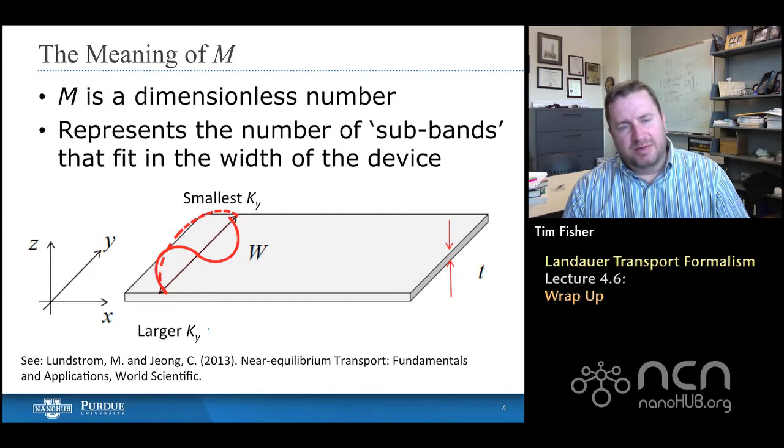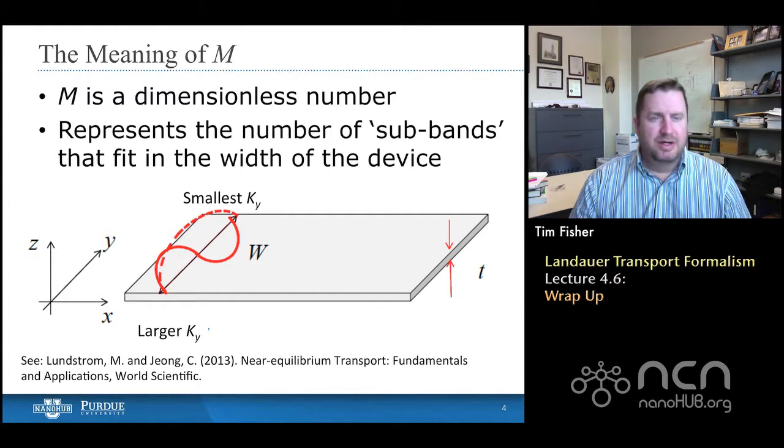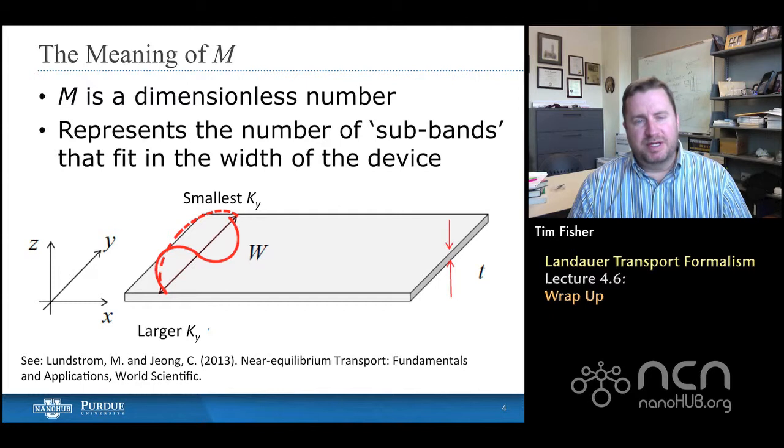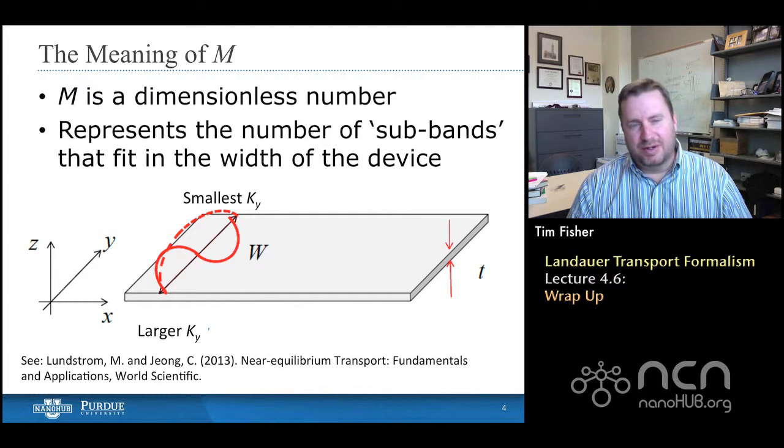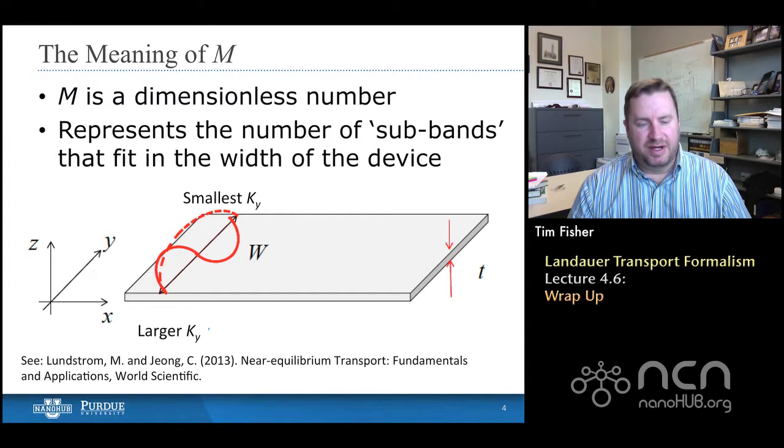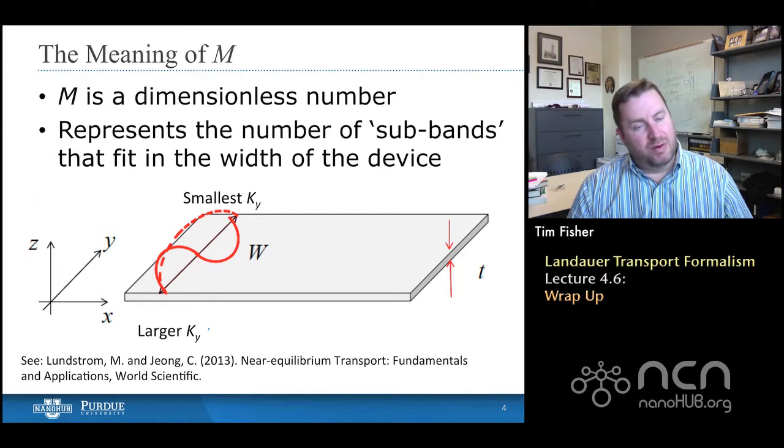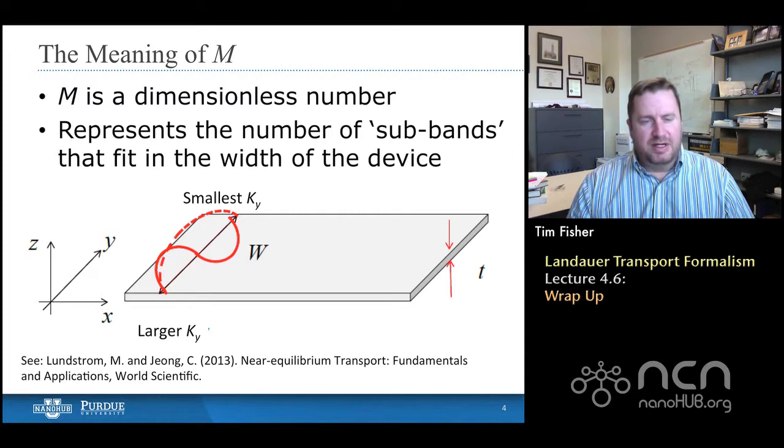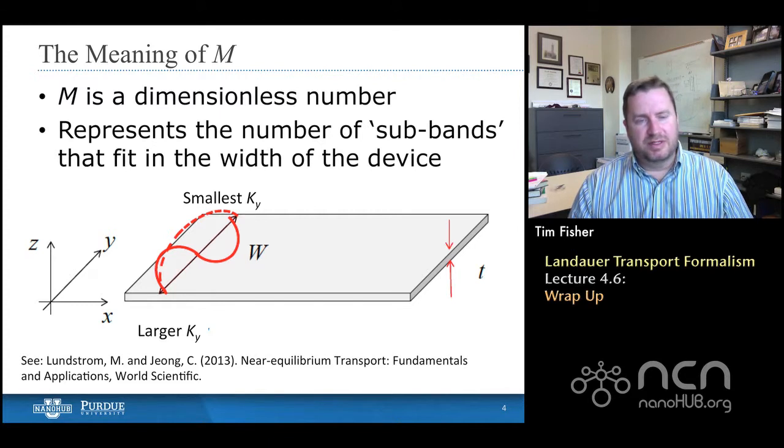So then we introduced this concept of the number of modes, and in the lecture, we started by really just deducing it mathematically. Now we found that it is a dimensionless number, and physically what it represents is the number of subbands that fit into the device. In a two-dimensional problem like I'm showing here, that means the number of half wavelengths that would fit into the width of the device.